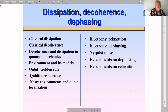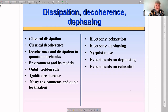Good morning, ladies and gentlemen. Let me start — this is the last lecture of our quantum transport course, and we will talk about dissipation, decoherence, and dephasing. For most of the course, we have idealized quantum systems. We have been talking about electron waves which propagate through a nanostructure like quantum waves at the same energy, keeping their quantum phase.